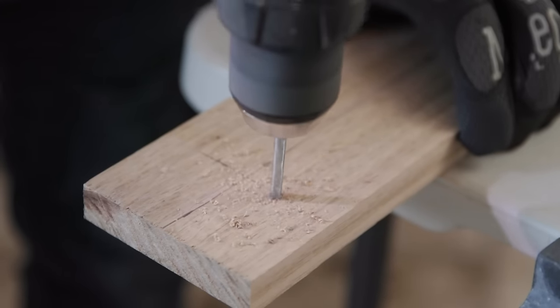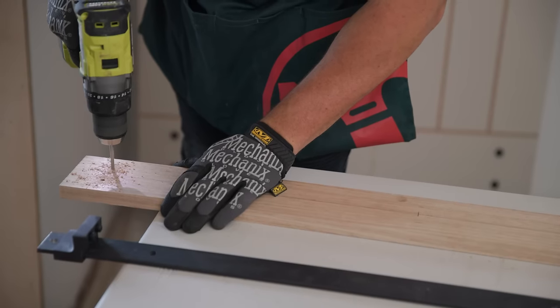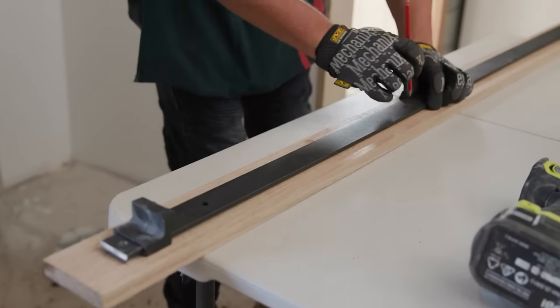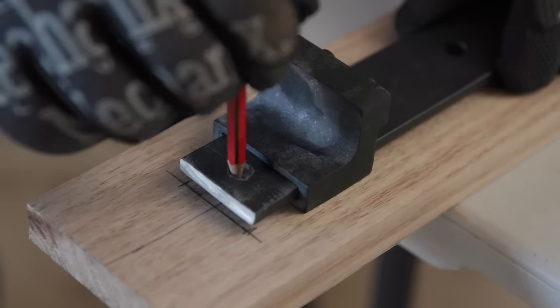Drill two holes at each stud point and make sure they're centered. Then mark the track holes onto the mounting board too and pre-drill them.